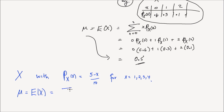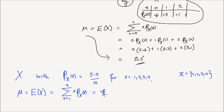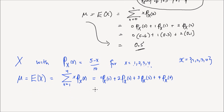The expectation equals the sum over the support {1, 2, 3, 4} of x times P_x(x). That is: 1 times P(x=1) plus 2 times P(x=2) plus 3 times P(x=3) plus 4 times P(x=4). Substituting: 1 times (4/10) plus 2 times (3/10) plus 3 times (2/10) plus 4 times (1/10), and you get a value equal to 2.